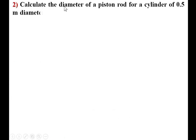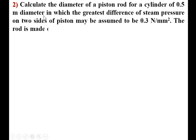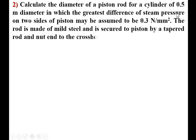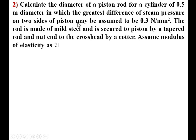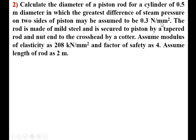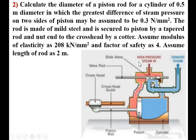Second problem: Calculate the diameter of a piston rod for a cylinder of 0.5 m diameter, in which the greatest difference of steam pressure on two sides of the piston may be assumed to be 0.3 N/mm². The rod is made of mild steel, secured to the piston by a tapered rod and nut, and to the crosshead by a cotter. Assume modulus of elasticity = 208 kN/mm², FOS = 4, and length of rod = 2 m.